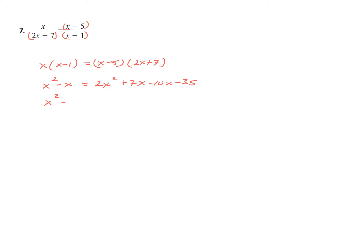Before we isolate and put it into quadratic form, let's combine like terms. That should give us minus 3X minus 35. The 2X squared is positive, so everything goes right. So 0 equals X squared minus 2X minus 35. The X squared came from subtracting 1X squared from both sides, and minus 2X came from adding X to both sides. In both cases, we were moving terms left to right.